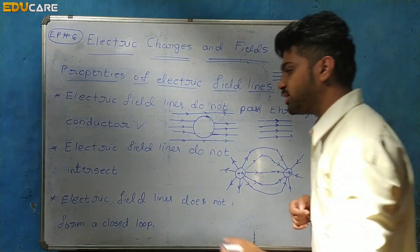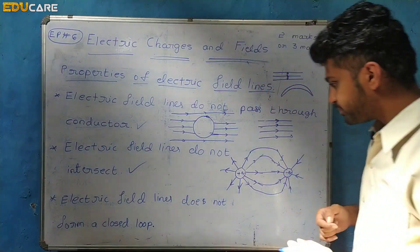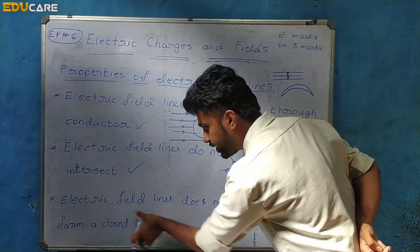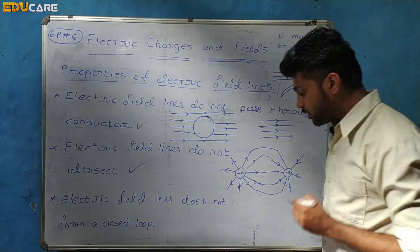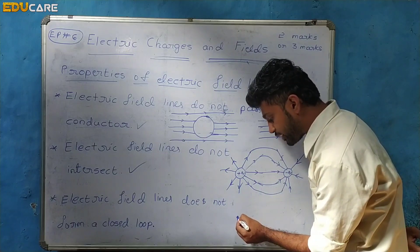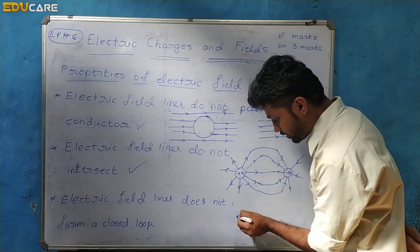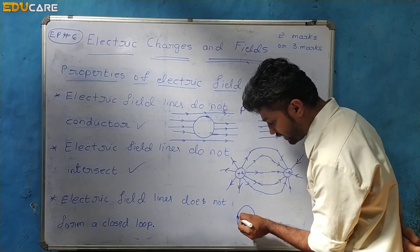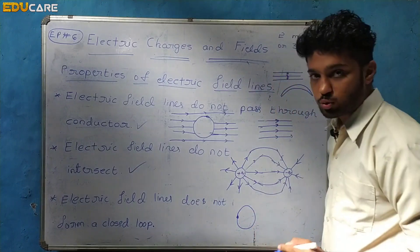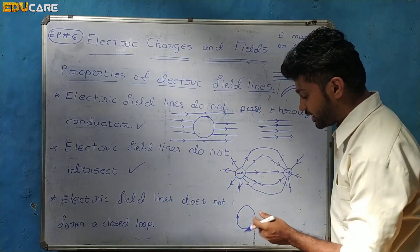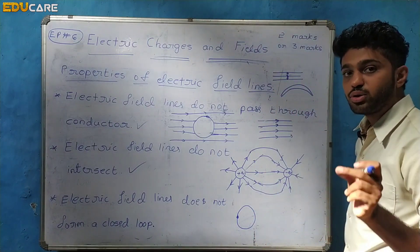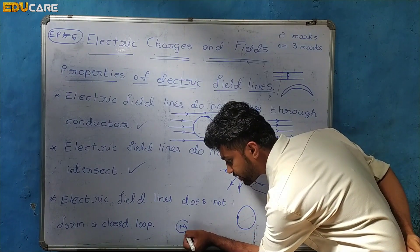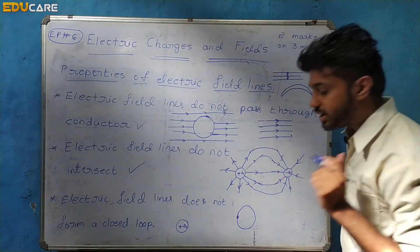The next property is: electric field lines do not form a closed loop. Electric field lines are generated due to charges. There are two types of charges: positive and negative. For a positive charge, electric field lines are radially outwards.